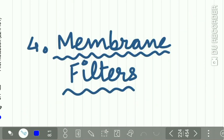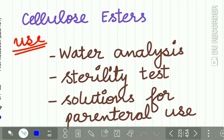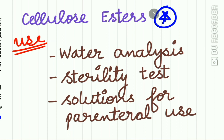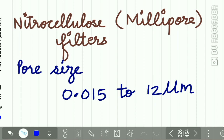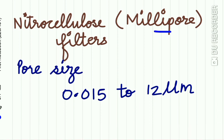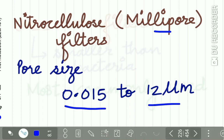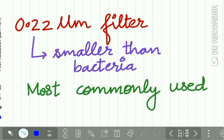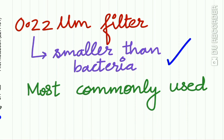The fourth type is the membrane filter. Membrane filters are made up of cellulose esters. They are mostly used for water analysis, sterility tests, and for preparation of solutions for parenteral use. Nitrocellulose filters, also called millipore filters, are widely used and have a pore size of 0.015 to 12 micrometers. The 0.22 micrometer filter is the most commonly used membrane filter, which filters away even the smaller bacteria.